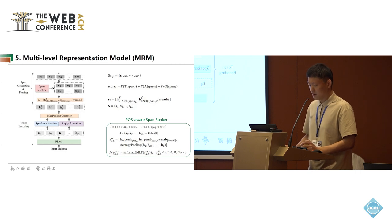However, the number of spans is squared with the number of tokens. For example, 100 tokens can enumerate 5050 spans. So, we train a span ranker to prune the span set. Specifically, we train a part-of-speech-aware span ranker to score each span in the span set. Then, we select the top K spans with highest score to construct the small and new span set, S-top.